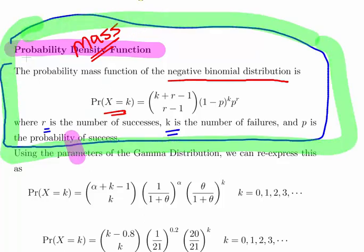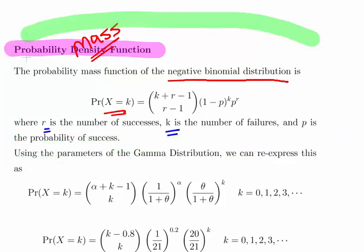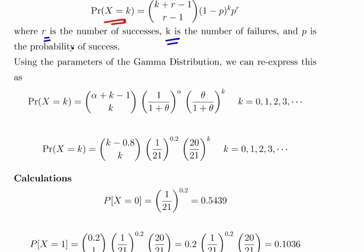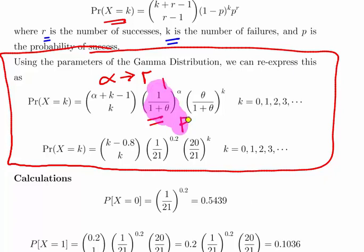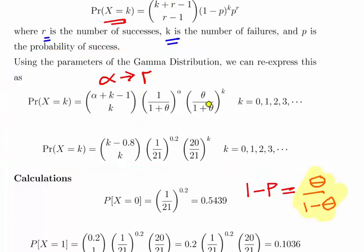But when we use the gamma distribution, or the Poisson-gamma mixture, we have to sort of restate a couple of things. What we do here is we let R equal alpha and the probability here is 1 over 1 plus theta. Because what happens is 1 minus P equals theta divided by 1 plus theta. P is 1 over 1 plus theta. 1 minus P is theta divided by 1 plus theta.